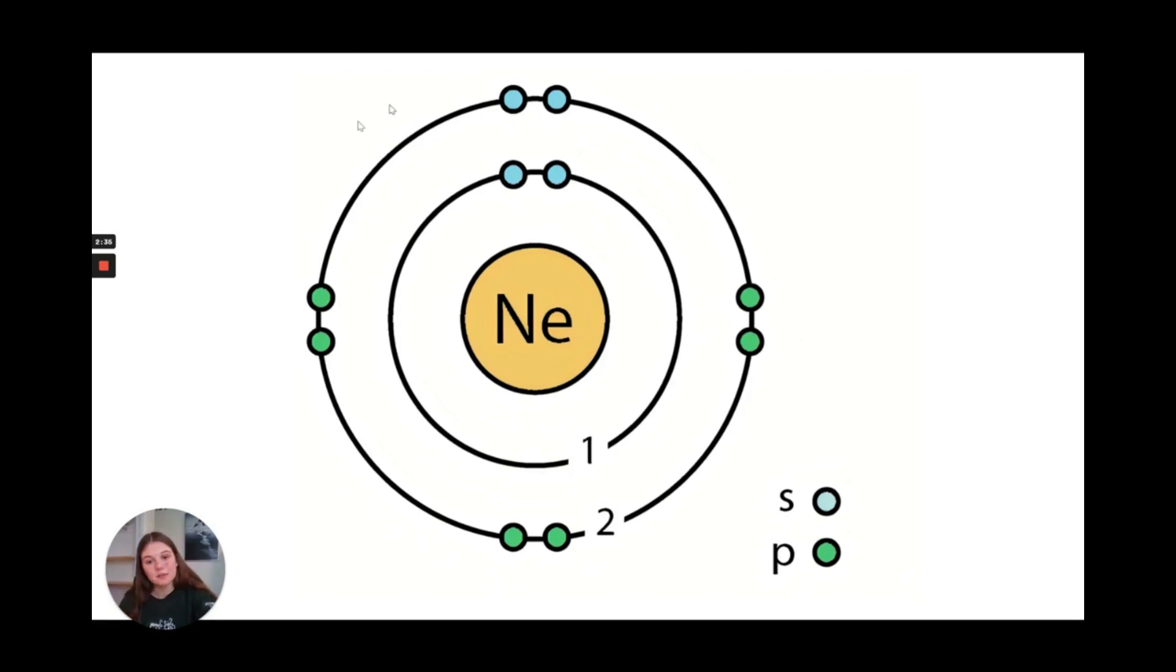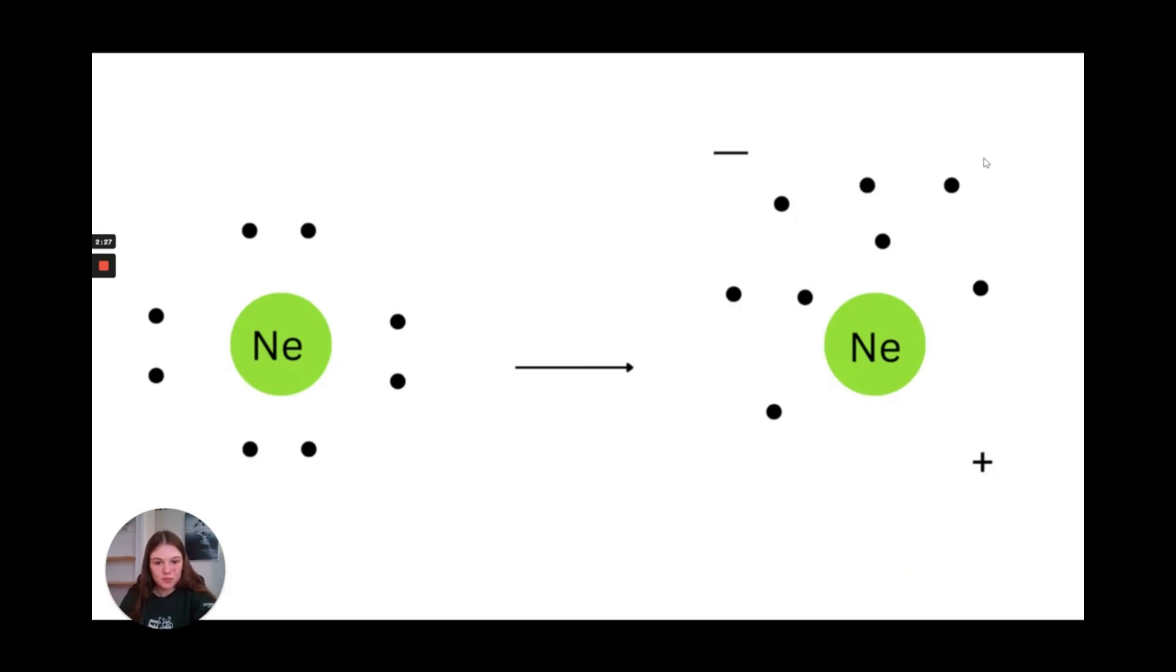If you look at this classic Bohr model diagram that you might draw while sitting in chem class, you see that they're very evenly spread around, right? There's no, they're all even.